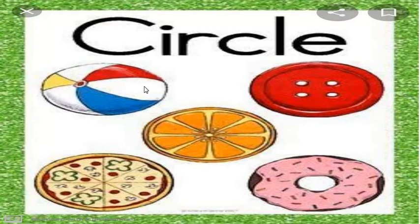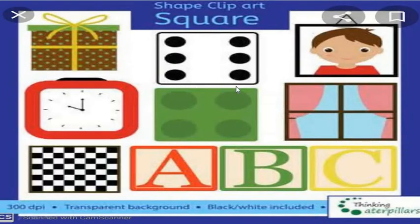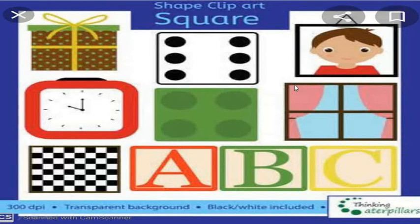Now, if you observe on the screen, what is present over there? This is a chess board, this is an alarm clock, a gift box, a photo frame, a window, and these are the blocks of ABC. What is the similarity in all these shapes? The similarity among all these objects is their shape. Which shape is it? It is square. The spelling of square is S-Q-U-A-R-E.